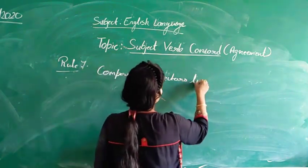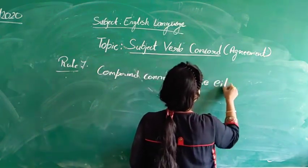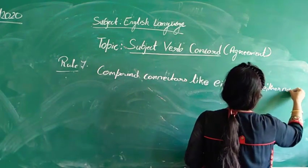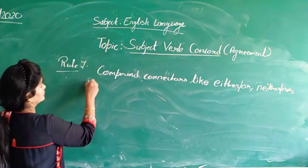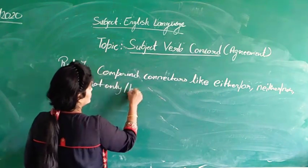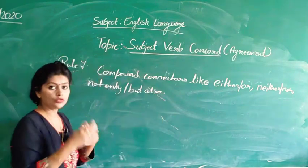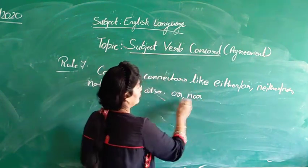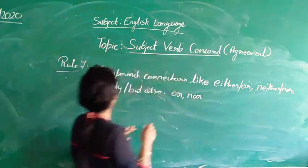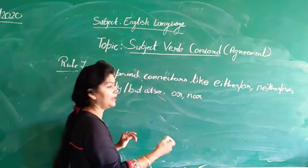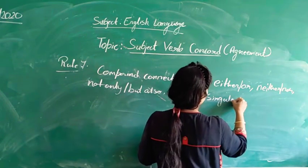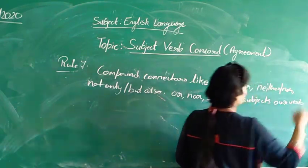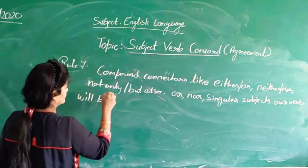Compound connectors or conjunctions include words like: either/or, neither/nor, not only/but also. This rule also applies to standalone words like 'or' and 'nor.' When we are using all these words with singular subjects, our verb will be singular.